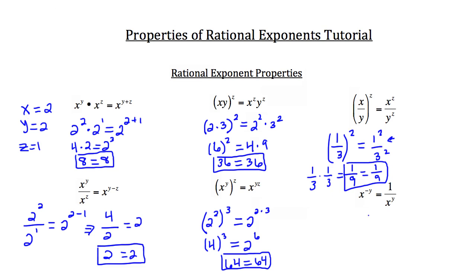Lastly, let's look at the bottom right. Any number raised to a negative power equals 1 over that number to the positive power. Plugging in 2 and 3 for x and y respectively: 2 raised to the negative 3 power is the same as 1 over 2 cubed. It's rewritten as 1 over 2 to the positive 3, which equals 1 over 2 to the positive 3.